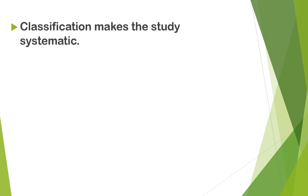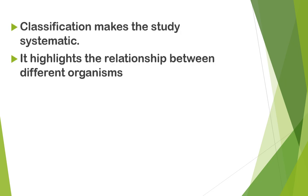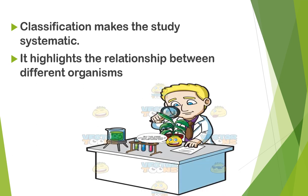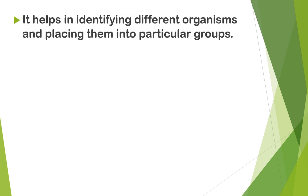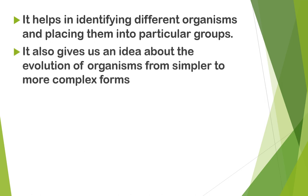Classification makes the study systematic. It highlights the relationship between different organisms. Classification also helps in identifying different organisms and placing them into particular groups, and gives us an idea about the evolution of organisms from simpler to more complex forms.